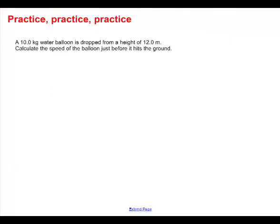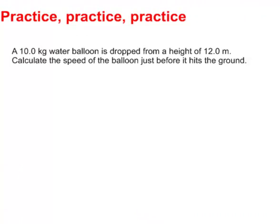Let's have a look and see how this actually works in action. We have a 10 kilogram water balloon dropped from a height of 12 meters. Calculate the speed of the balloon just before it hits the ground. Speed means velocity, and the equation that contains velocity is kinetic energy: mass times velocity squared divided by two.